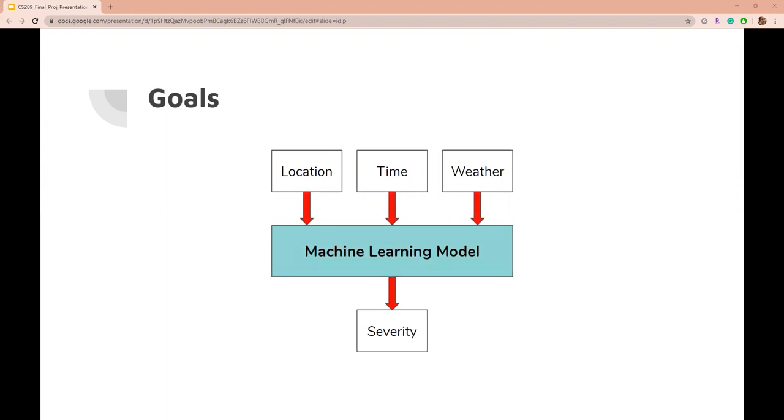Based on the location, time, and weather information, we apply machine learning models to predict the severity of car accidents in California.